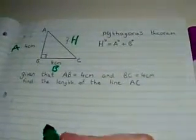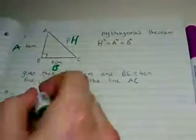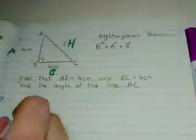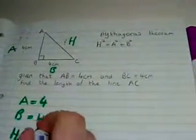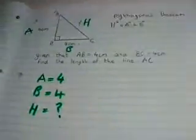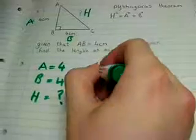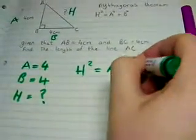Then all you have to do is sub in what you have. A equals 4, B equals 4, and H, you want to find what H is. Then you sub it in to this equation, which is H squared equals A squared plus B squared.